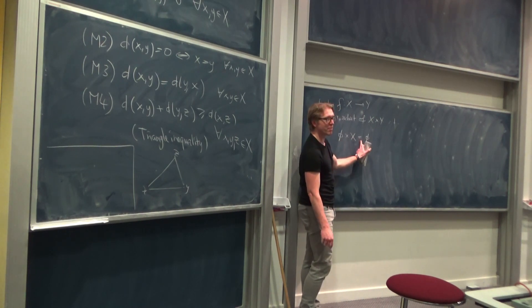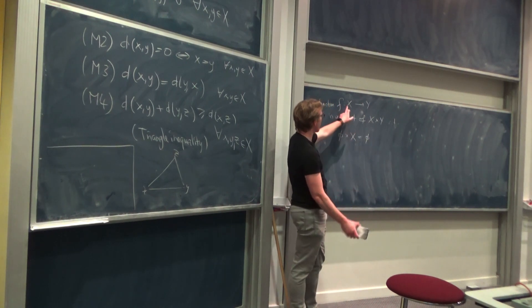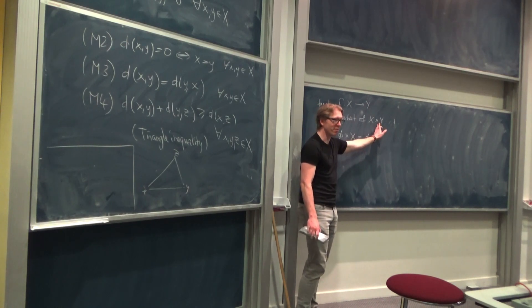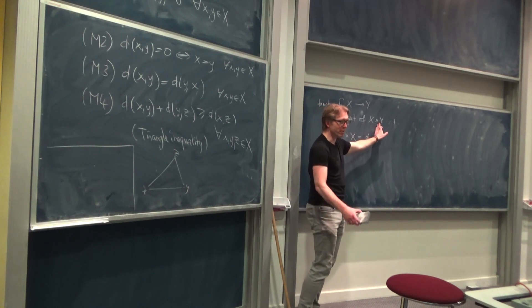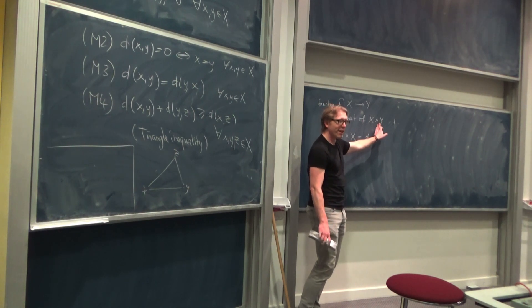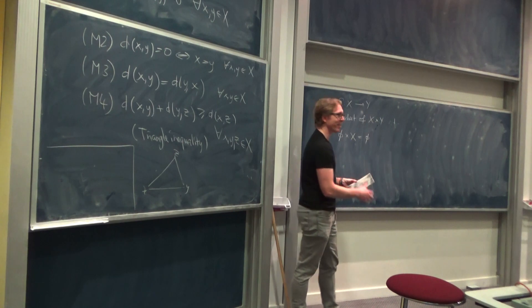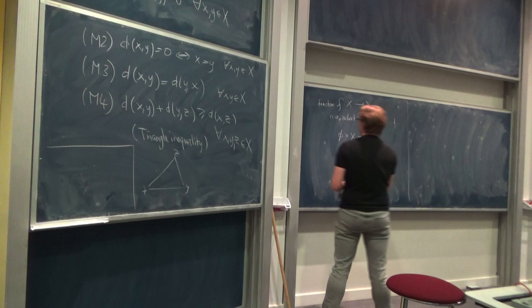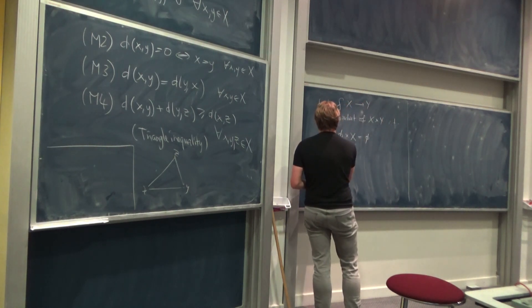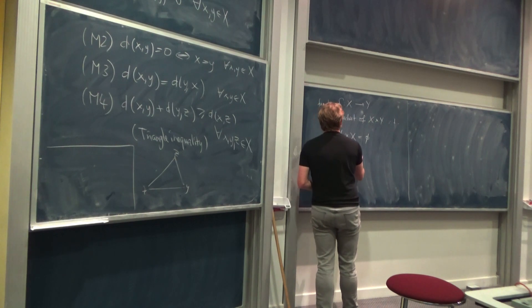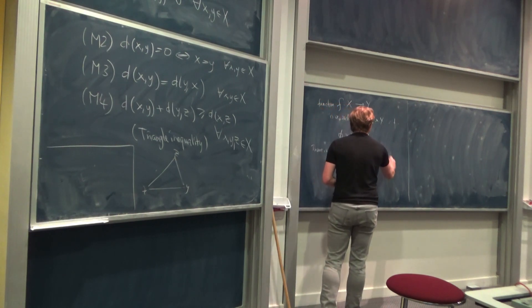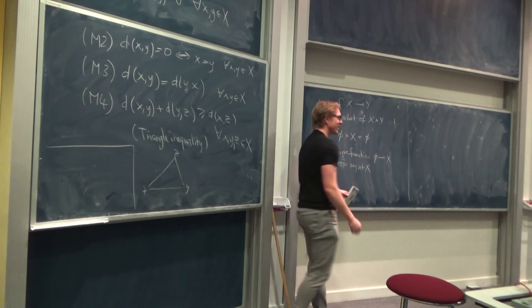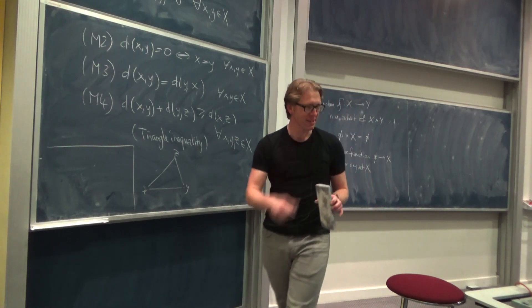Okay, so what are all functions from the empty set to Y? Well, they're all the subsets of the empty set such that blah, blah, blah. And all those conditions are trivial because there's only one subset of the empty set. But that is a function from X to Y. Okay, so there is a unique function from the empty set to X for any set X. And that's sort of just written into the fine details of what the definitions mean.